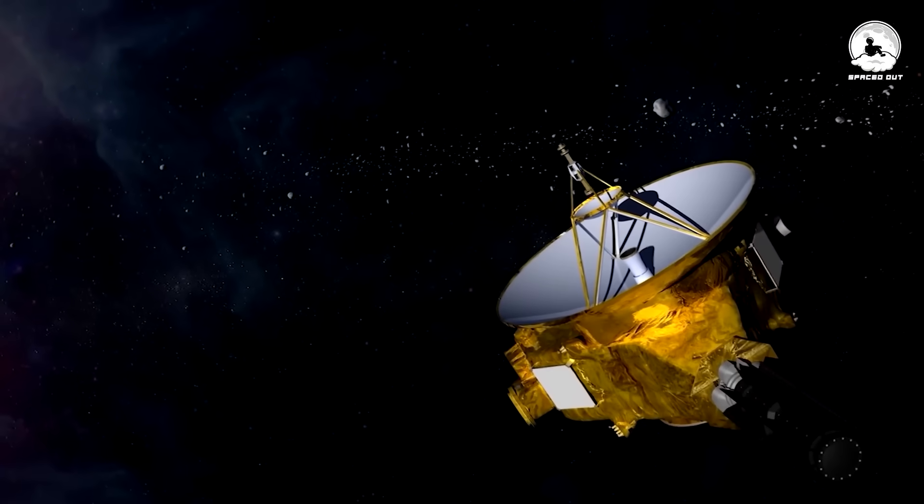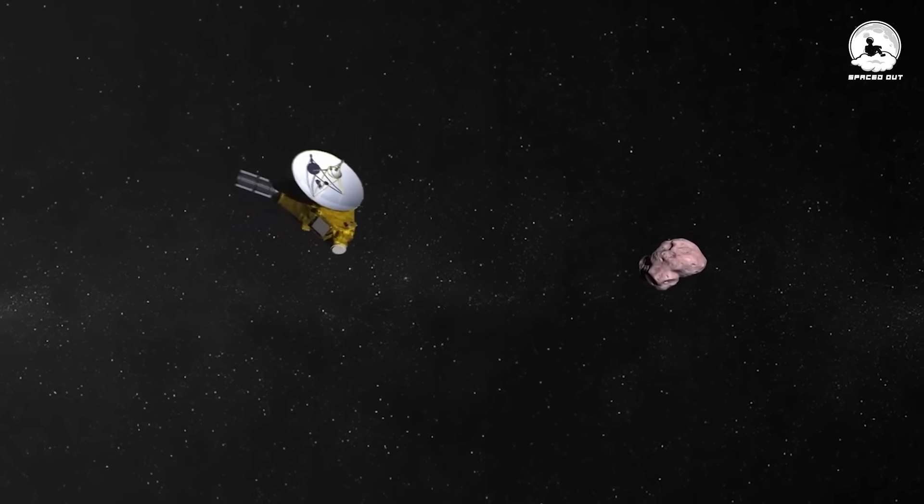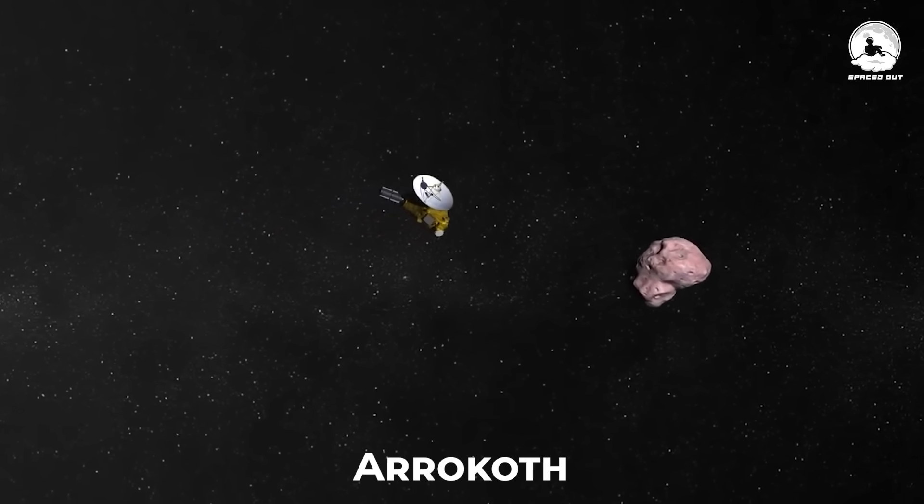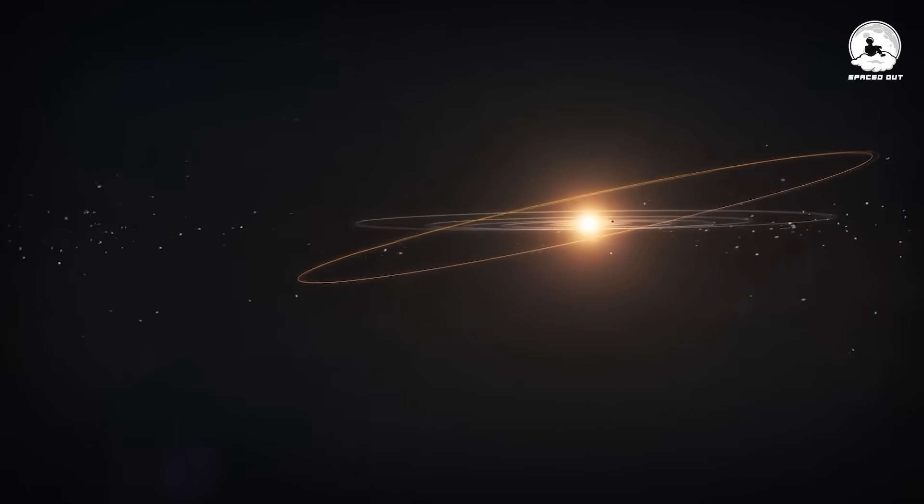On the 1st of January 2019, the New Horizons spacecraft flew past the ancient Kuiper Belt object Arrokoth, providing humankind's first close-up look at one of the icy remnants of the solar system's formation.